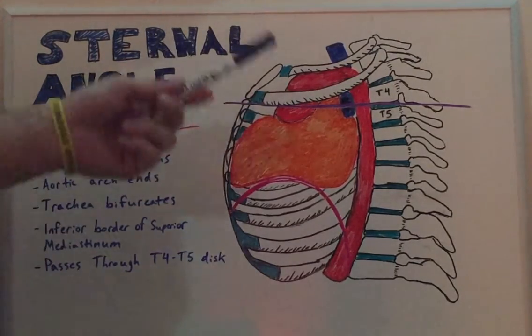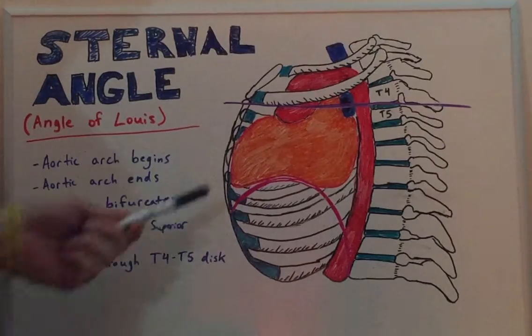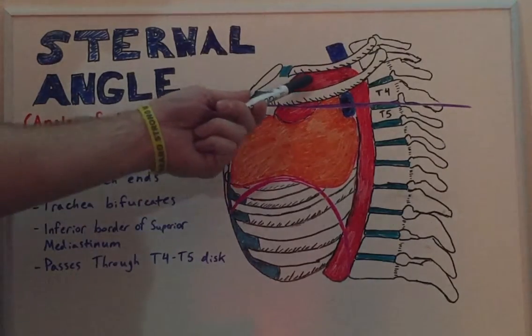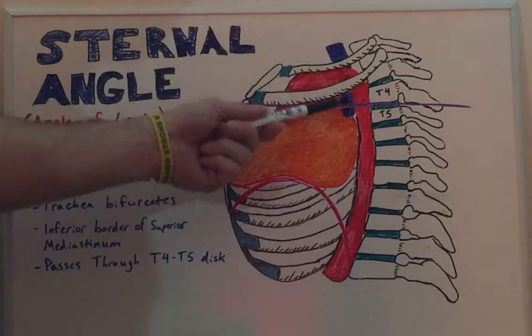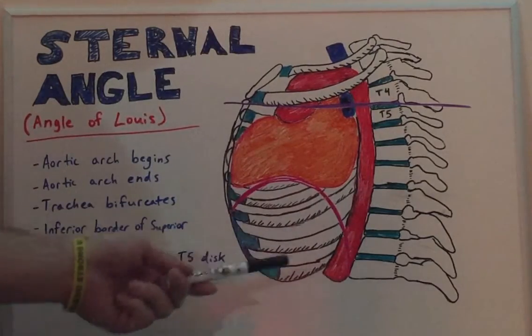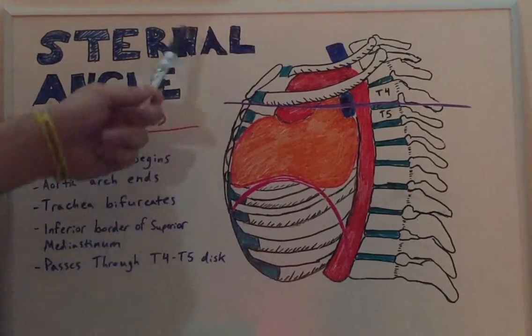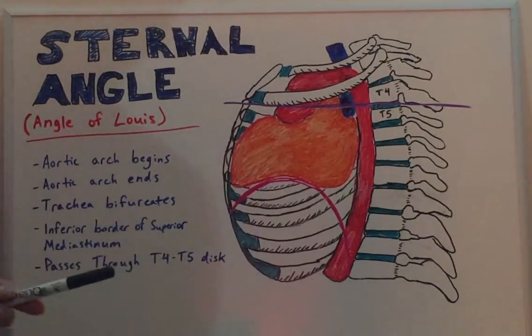From this diagram we can see that we have the heart, the aorta, the trachea, as well as our vertebral column, some ribs, and our diaphragm.